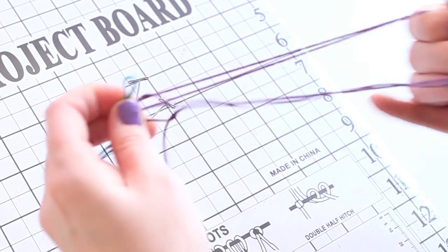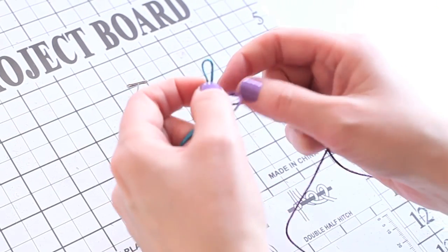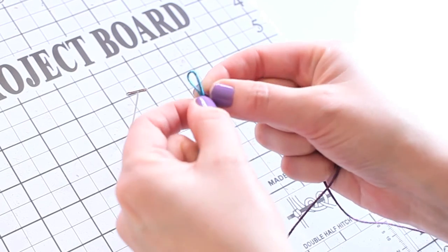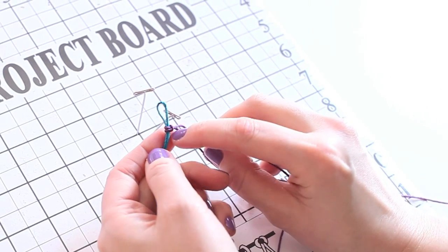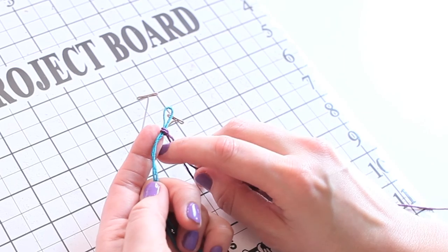Once we do that, our project will be set up and ready to start knotting our two color bracelet. So there you go, the lark's head knot around the blue string.